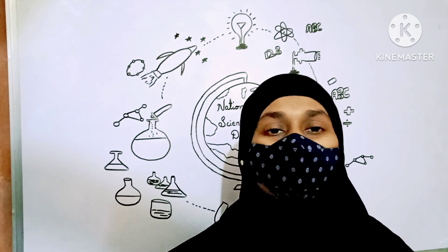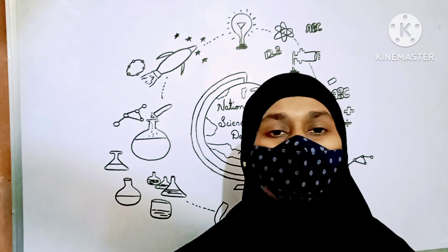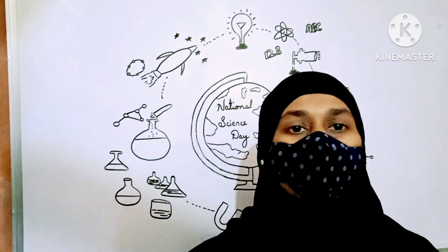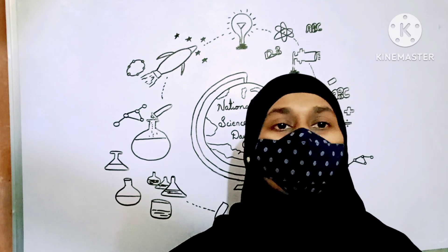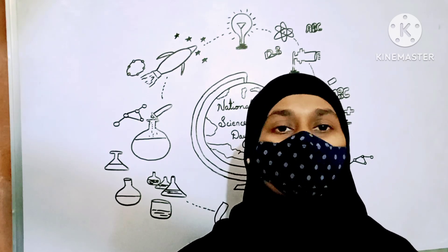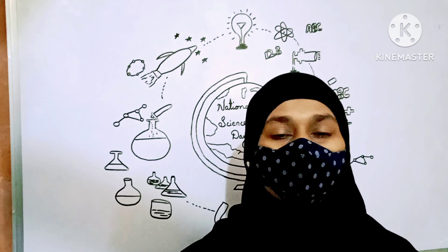He worked in Kolkata at the Indian Association for the Cultivation of Science. On 28th February, Raman led an experiment with the Indian physicist K.S. Krishnan on the scattering of light.